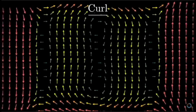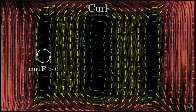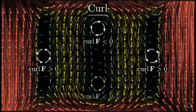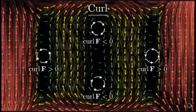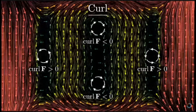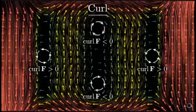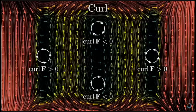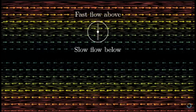For the curl at a given point, think about the fluid flow around it and ask how much that fluid tends to rotate around the point. If you were to drop a twig in the fluid, fixing its center in place, would it tend to spin? Regions where rotation is clockwise have positive curl; counterclockwise have negative curl. A point where flow is slow at the bottom but quick on top would also have non-zero curl.